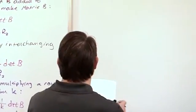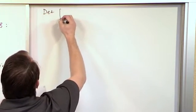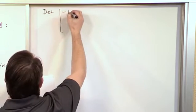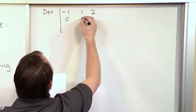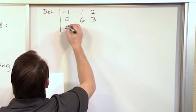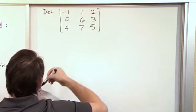So let's say we want to find the determinant of the following matrix. So we write it like this, DET. We have negative one, one, two, and then we have zero, six, three, and then we have four, seven, five. And we want to calculate the determinant of this.